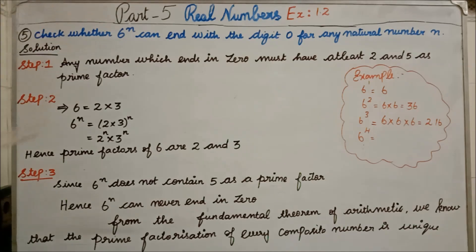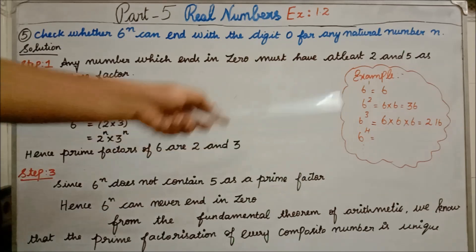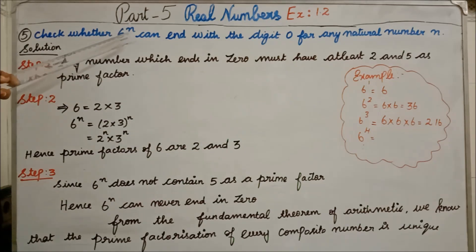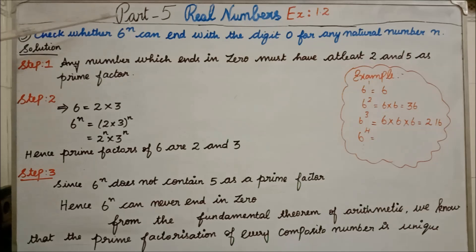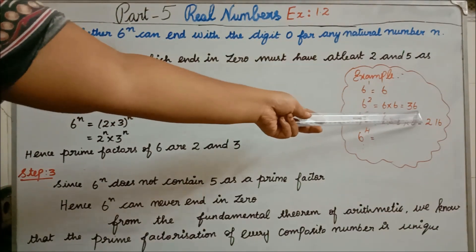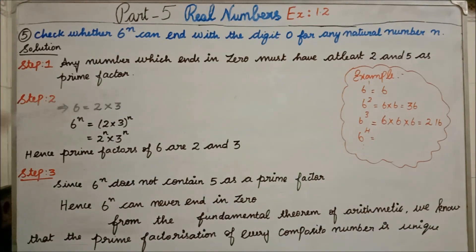6^N: if N = 1, then 6^1 = 6. If N = 2, then 6^2 = 6 × 6 = 36. If N = 3, then 6^3 = 6 × 6 × 6 = 216. So whatever natural number you give as N — notice all results end with 6, not 0. The question is: for what value of N will we get 0 as the ending digit?